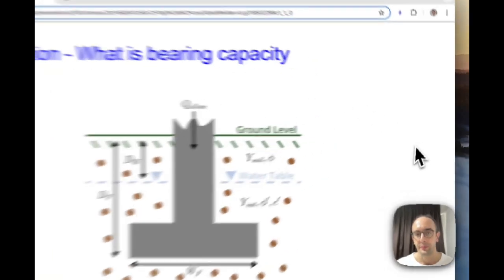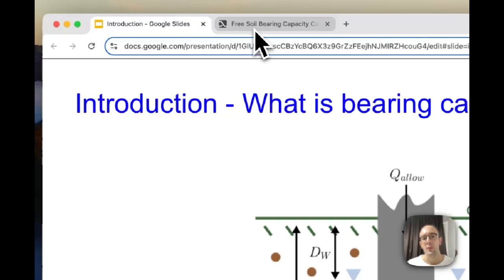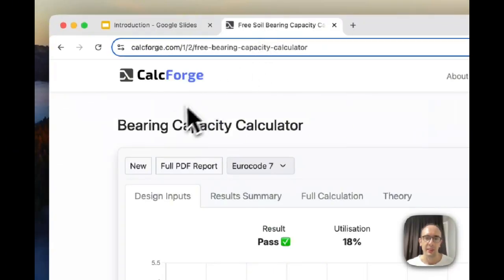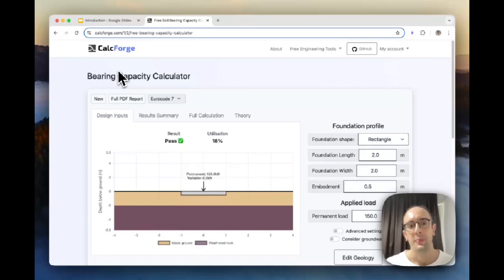So now what I'm going to do is I'm actually going to show you some free software which basically you can run this Terzaghi analysis on the web. So I want you to go over to CalcForge.com, so it's www.calcforge.com. I'll put the link in the bio and I'll talk you through here how you can actually use this free software to run these calculations.